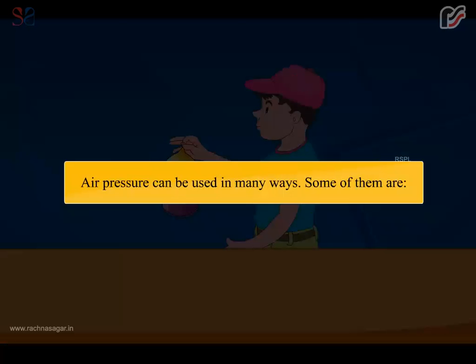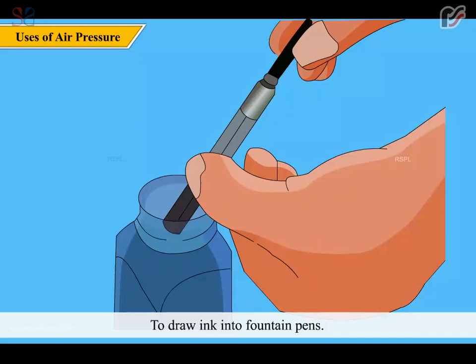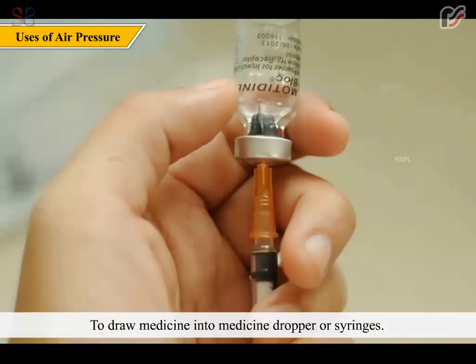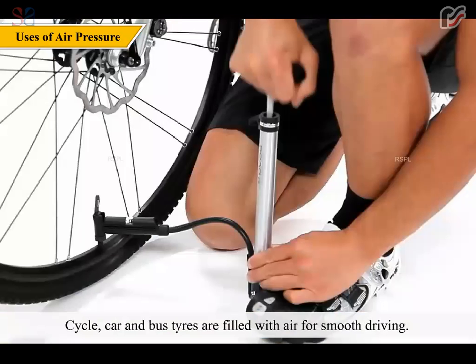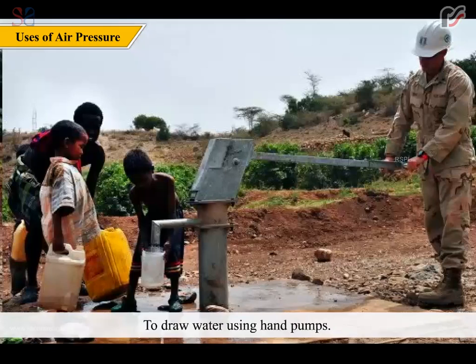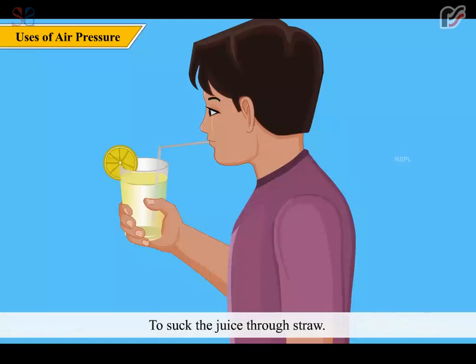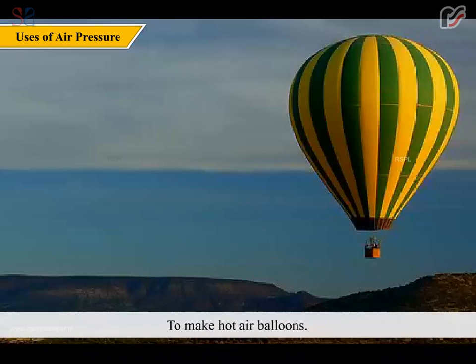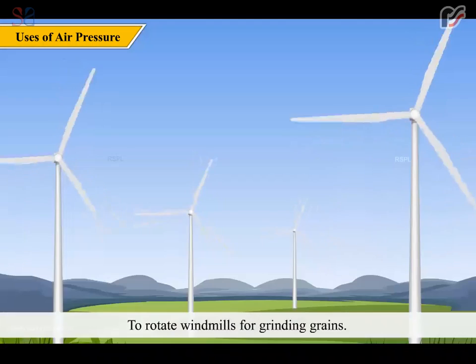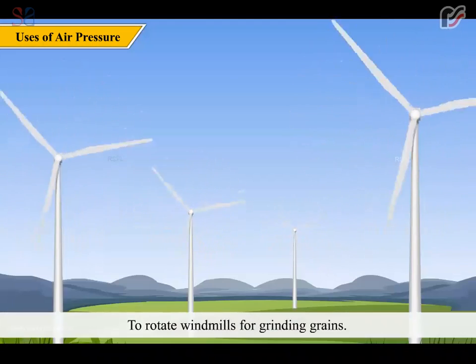Air pressure can be used in many ways. Some of them are: To draw ink into fountain pen. To draw medicine into medicine dropper or syringes. Cycle, car and bus tires are filled with air for smooth driving. To draw water using hand pumps. Air pressure can also be used to make fountains. To suck the juice through straw. To make hot air balloons. To rotate windmills for grinding grains.